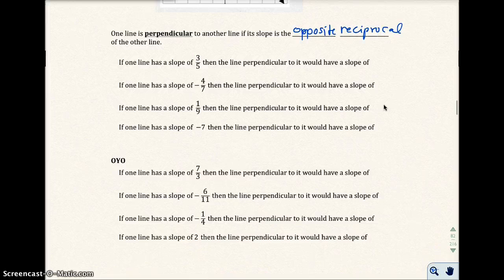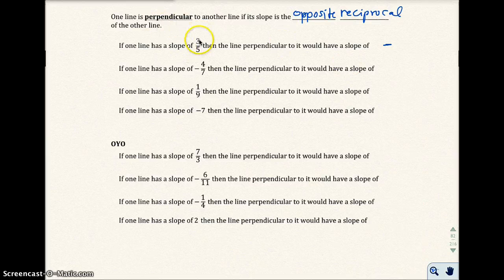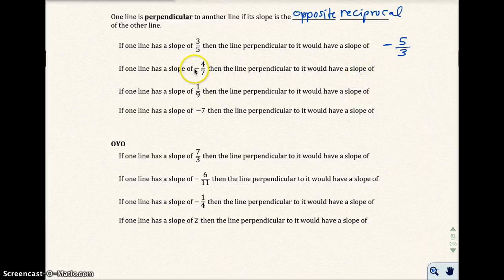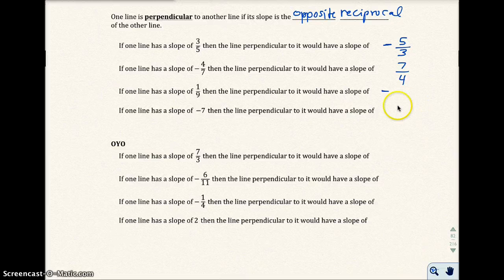Let's do a quick exercise. If one line has a slope of 3 fifths, the perpendicular line would have a slope of negative 5 over 3 — take the reciprocal and change the sign. If one line has a slope of negative 4 sevenths, the perpendicular line would have a slope of positive 7 over 4. If a line has a slope of 1 over 9, the perpendicular line would be negative 9 over 1, which is negative 9.